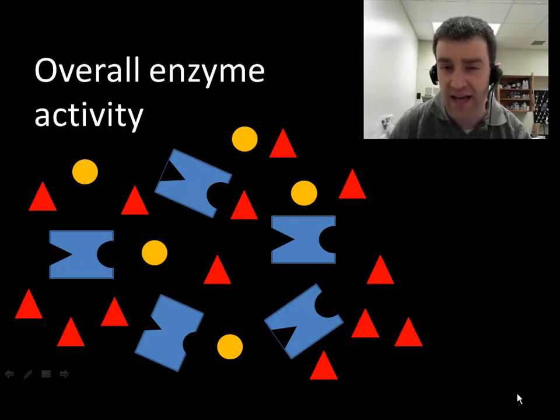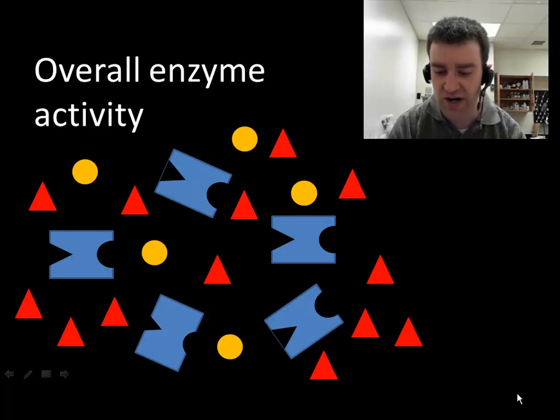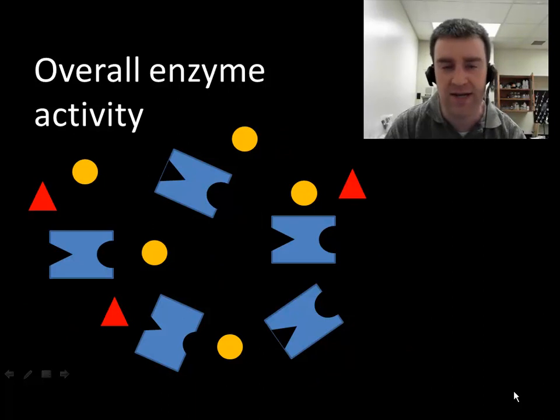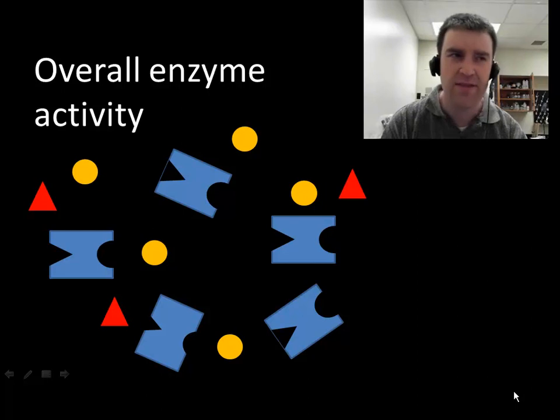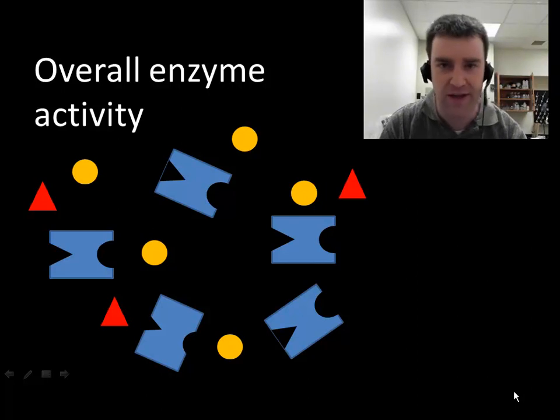But if that end product maybe is used at some other point for some other chemical reaction within the cell, which is very common, then perhaps these red triangles would go away and be cleared out. And then they would fall off as the inhibitor of these enzymes and enzyme activity would immediately pick back up again. So I hope you can kind of appreciate the beauty of that system. The enzymes are active when there isn't very much of the product that they produce.